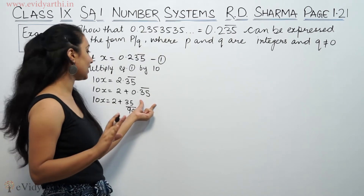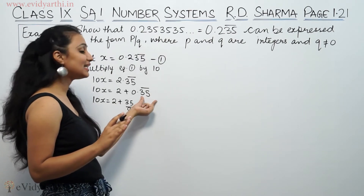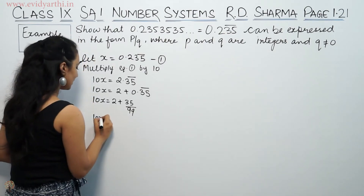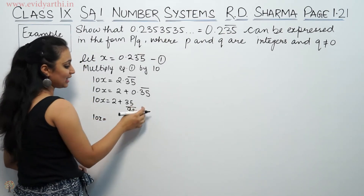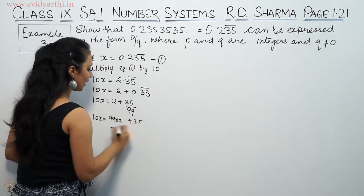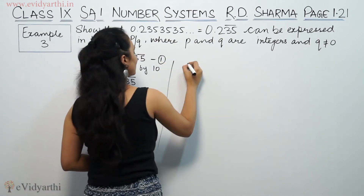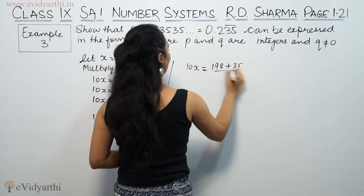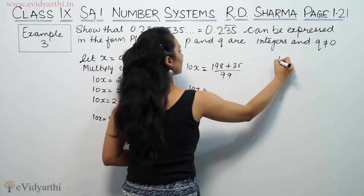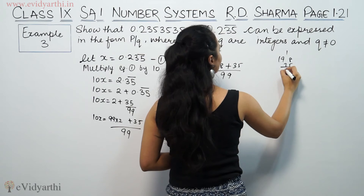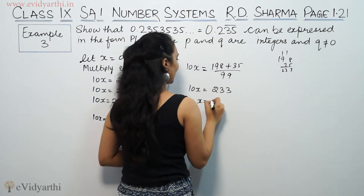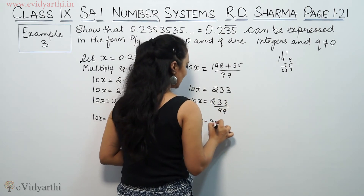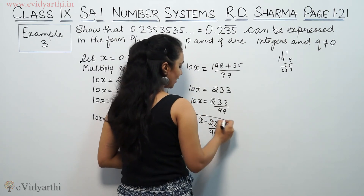So from 10x = 2 + 35/99, we get 10x = 99 times 2 plus 35, all over 99, which equals 198 + 35 over 99. That gives 10x = 233/99, so x = 233/990.